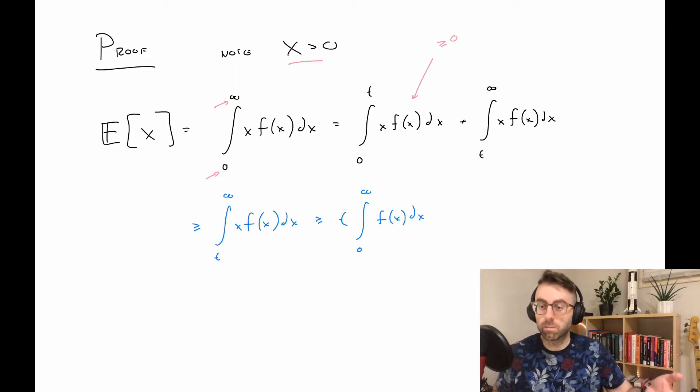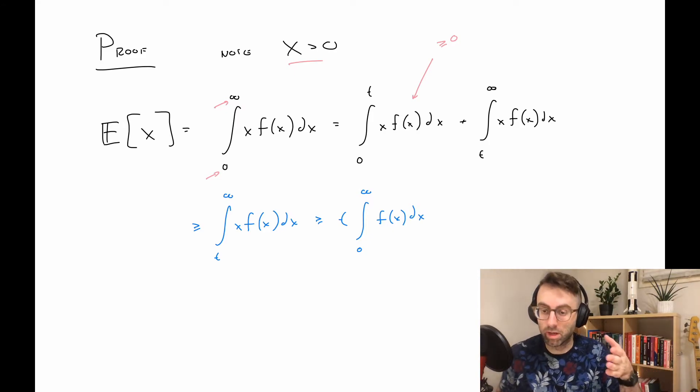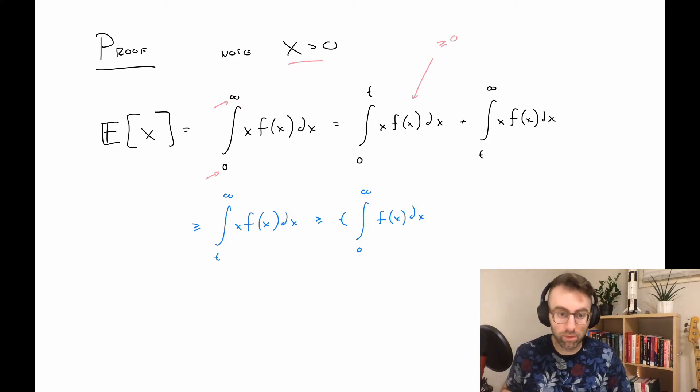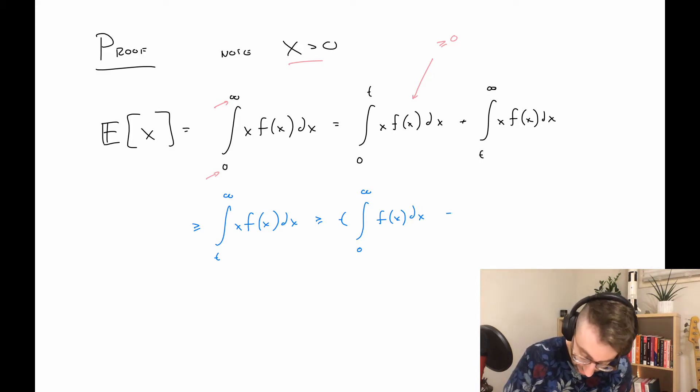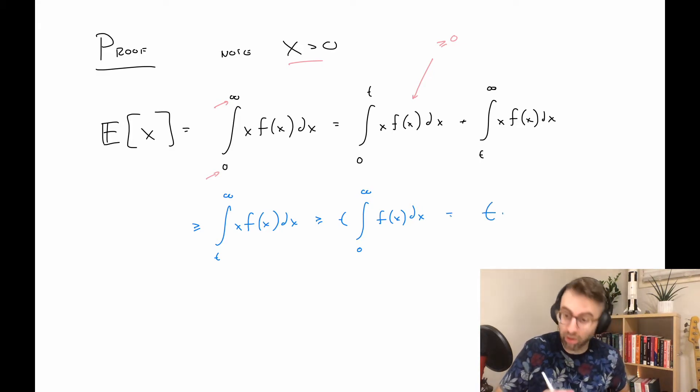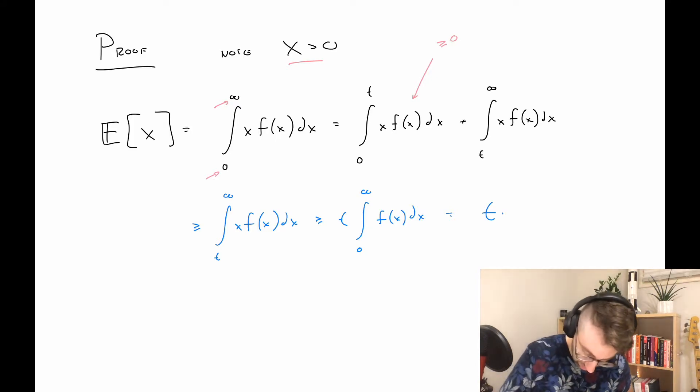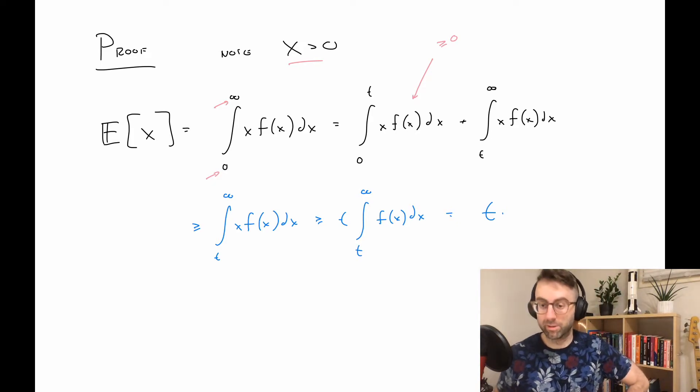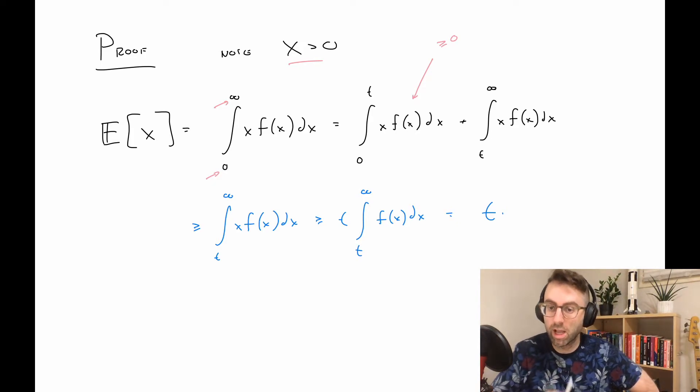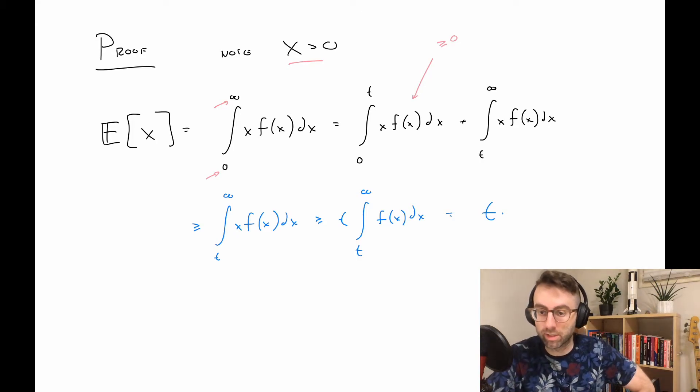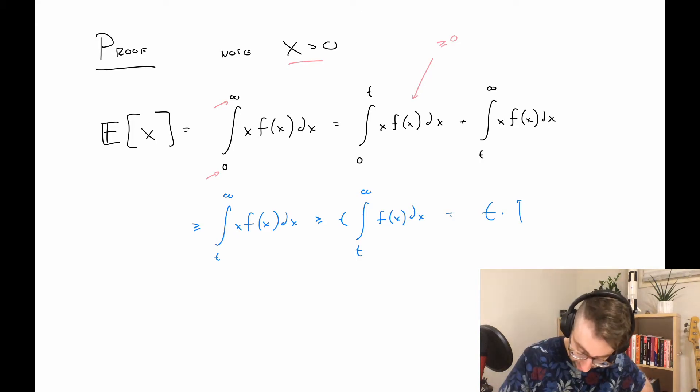If we just ignore the one that's bigger than zero, that's how that works. Then we can be sort of clever here. Since t is the smallest possible value that X can take here, we have this relationship.